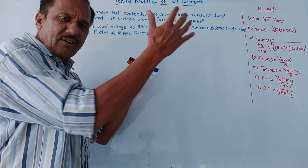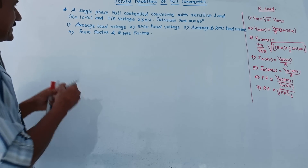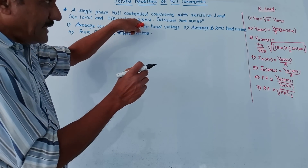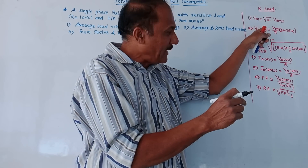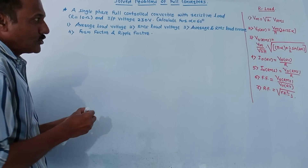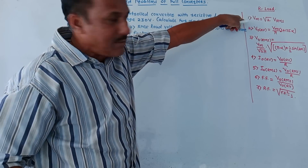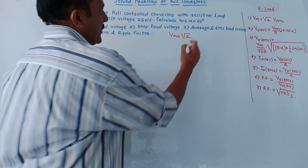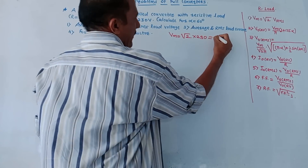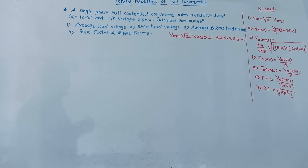In this numerical, all varieties are considered. First, recall the basic things. We need to calculate maximum voltage because the given voltage 230 volt is RMS voltage. We have a ready-made formula: Vm is root 2 times Vrms. So Vm equals root 2 into 230 volt, giving Vm equals 325.269 volt. This is the value of maximum voltage.